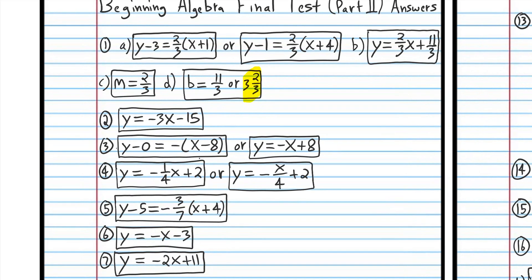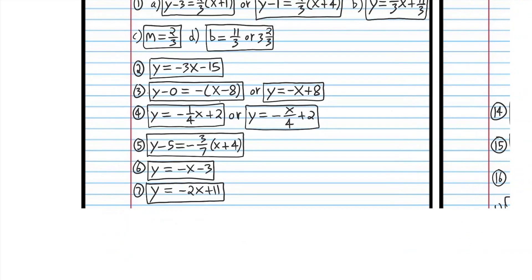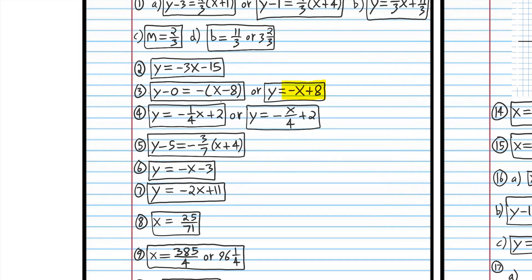Notice you can write a mixed number or you can write an improper fraction on that problem — either answer is correct. You can write slope-intercept form or you can write point-slope form; either answer is correct. Notice there are different ways to write the equation of the line: you can write it as negative one-fourth x or as negative x over 4 — it's the same thing.